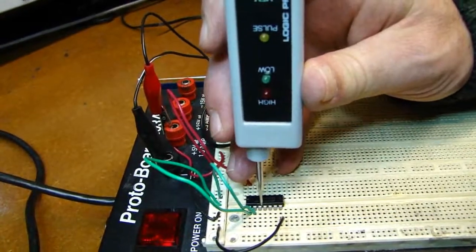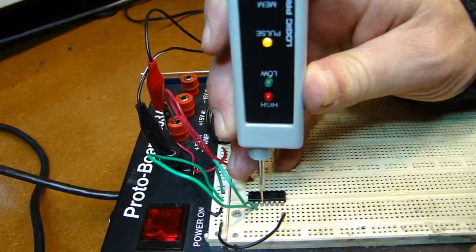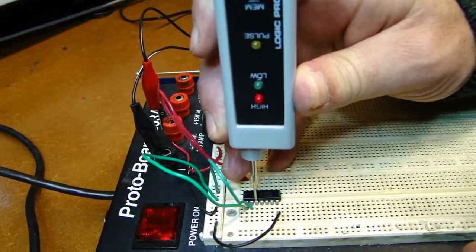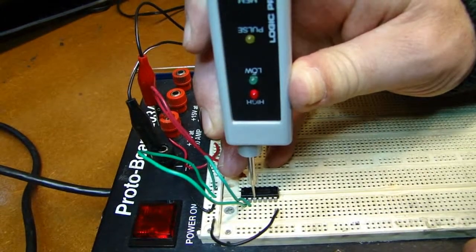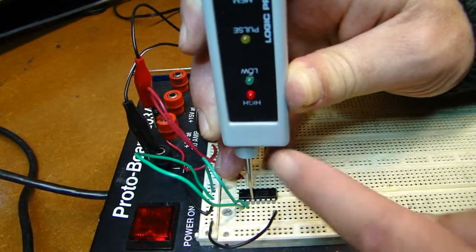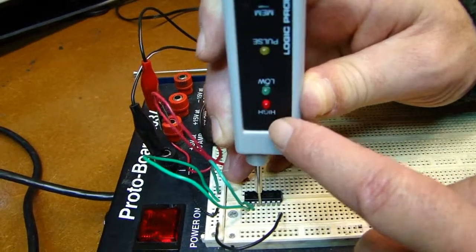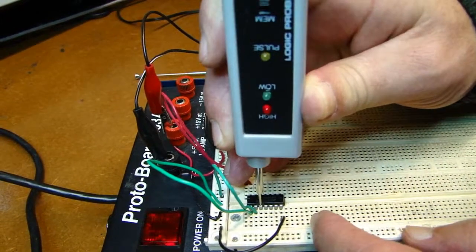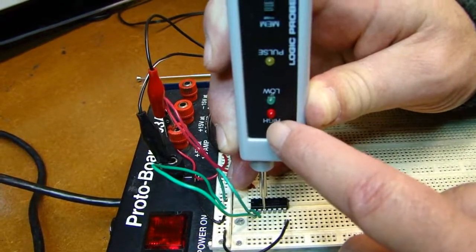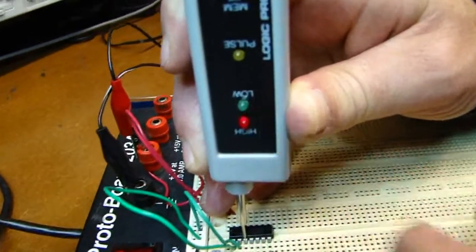And you see here that if the two inputs are low, the output is high, which is shown through a red LED that turns on. Because the red LED means high, the green LED means low.